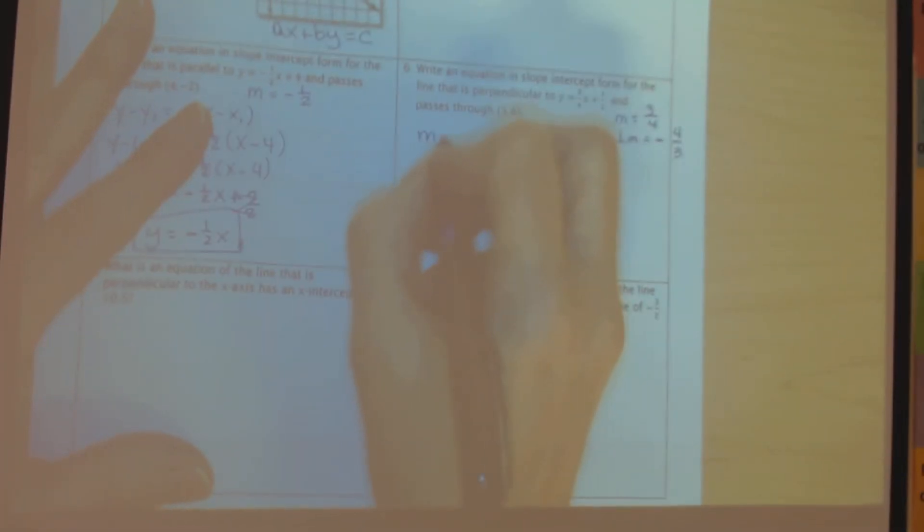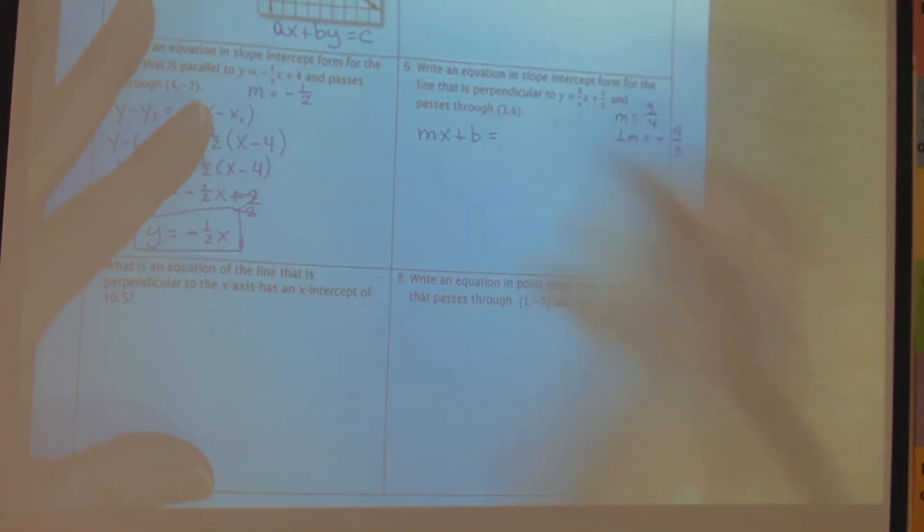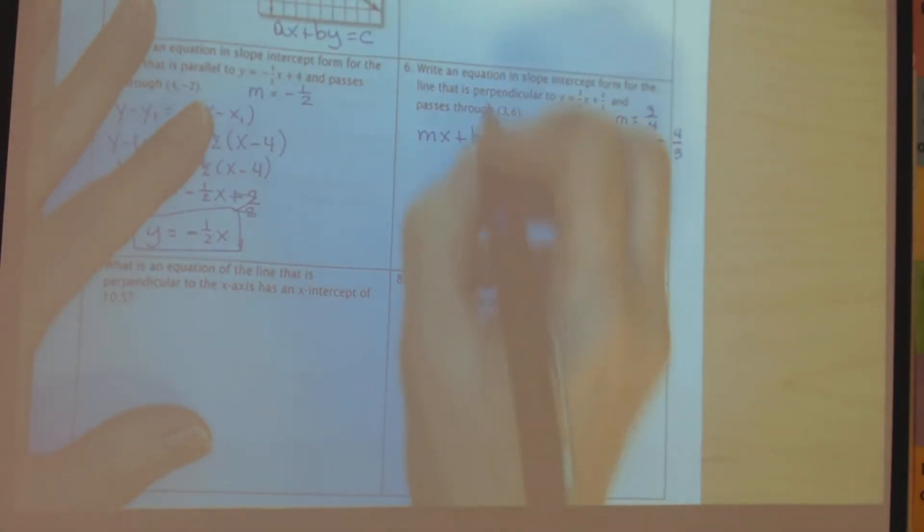So I'm going to go ahead and use the table. Since they want me to write it in slope-intercept form, I'm just going to use this where the table goes like this and replace the information I know. So my slope is going to be negative 4 thirds, my x value is 3, I don't know what b is, that's what I'm looking for, my y value is 6.